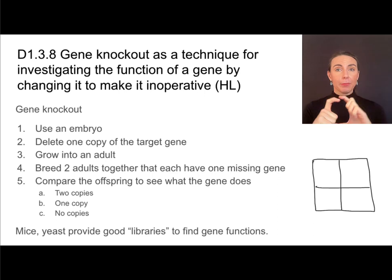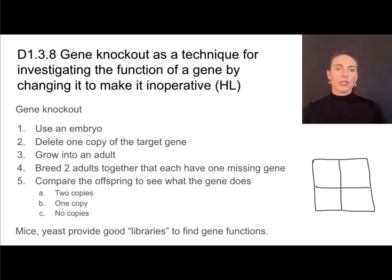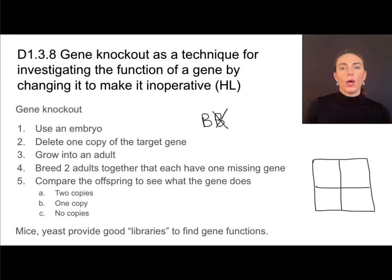We take an embryo — it's important to use an embryo because changes to the embryo will also be repeated in all the cells made from it. In that embryo, we want to delete one copy of the target gene. We inherit two alleles for each gene, so a normal cell would have two copies. In gene knockout, we eliminate one of those genes from the embryo so it only has one copy, not two. Then we grow it into adults.